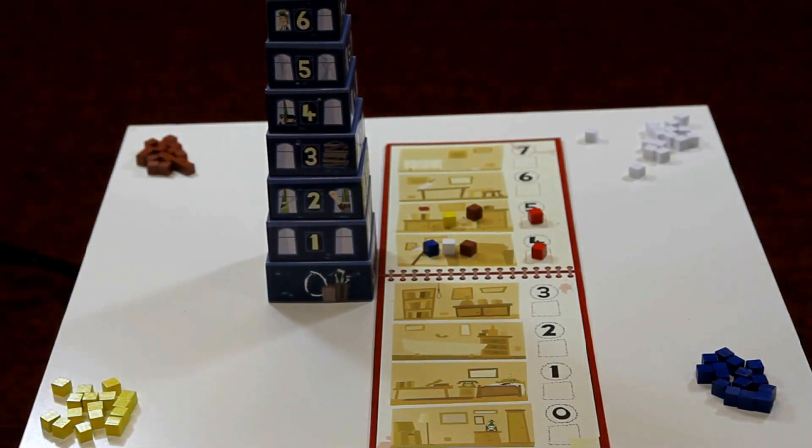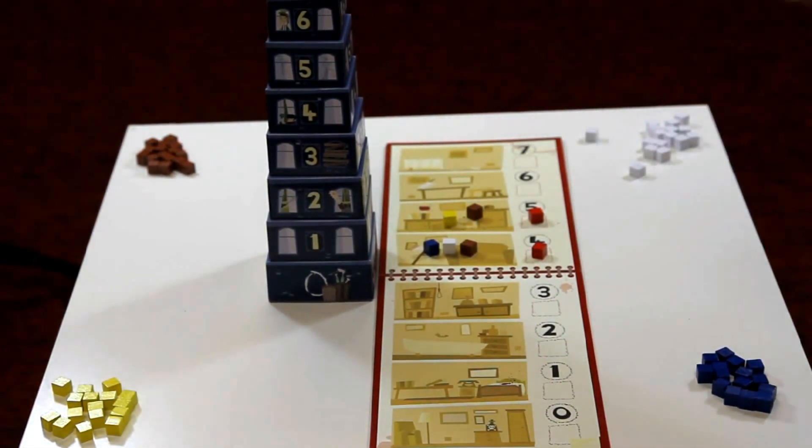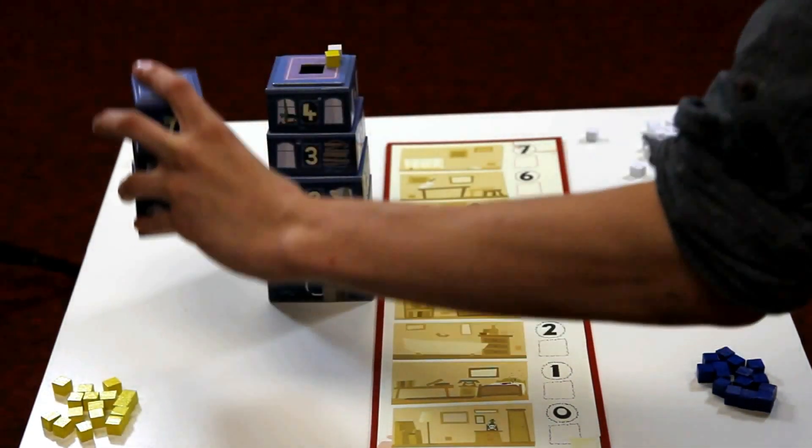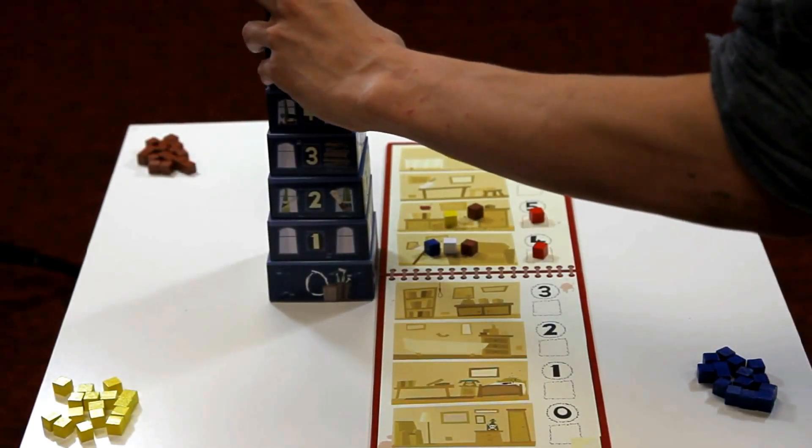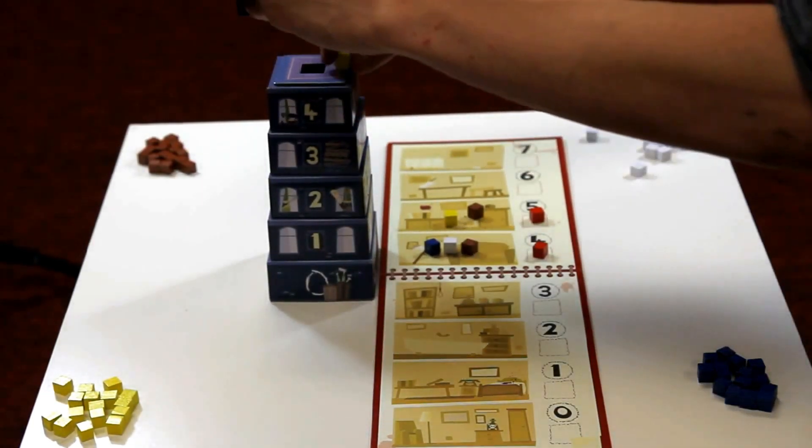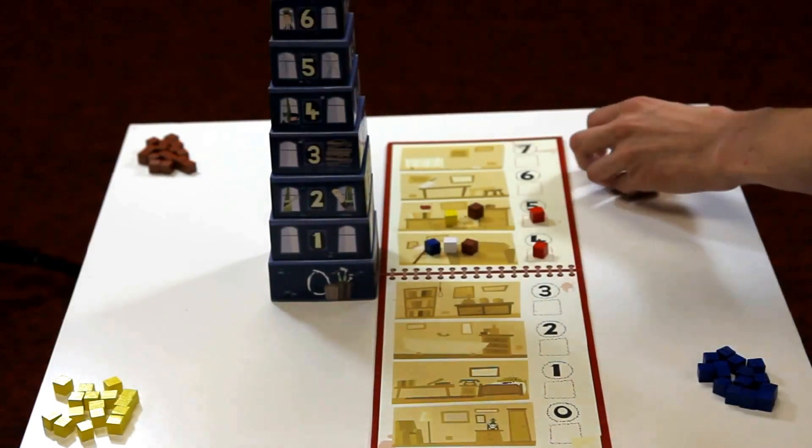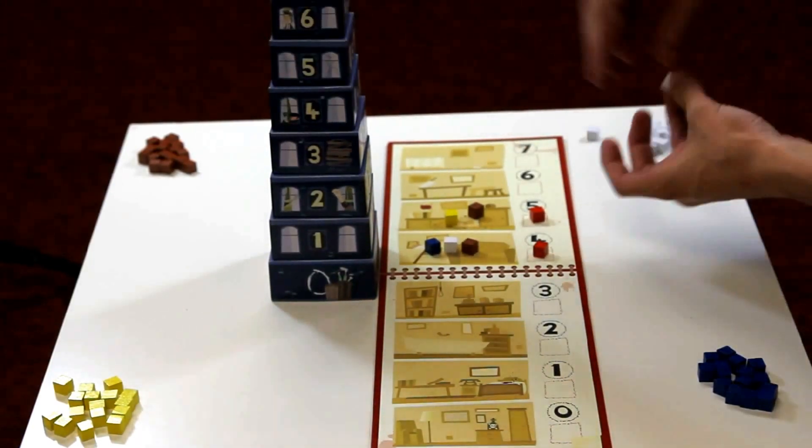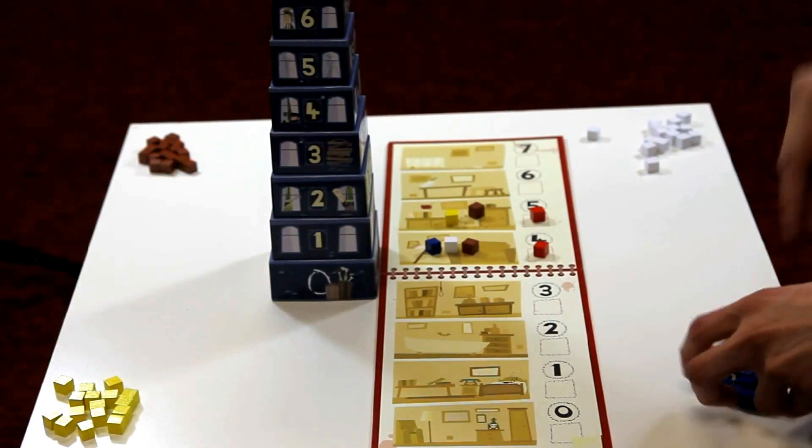The white player starts by accusing the blue player of being on the fifth floor. The blue player is not on the fifth floor. For making a wrong guess, the revealed cubes are re-seeded, and the white player must now add one of their own cubes.